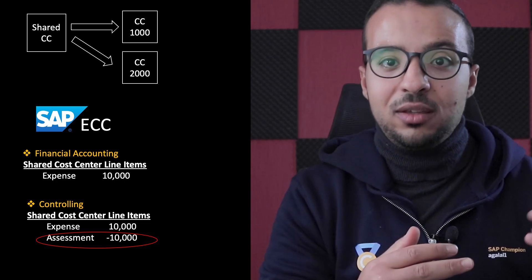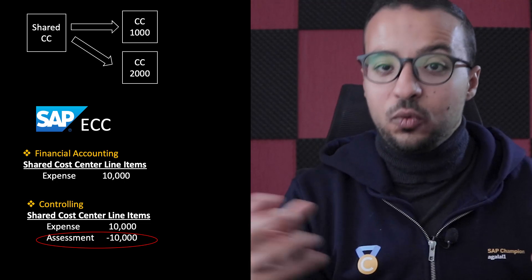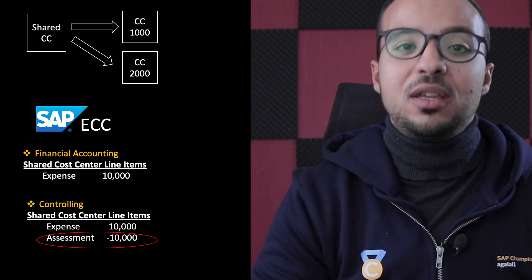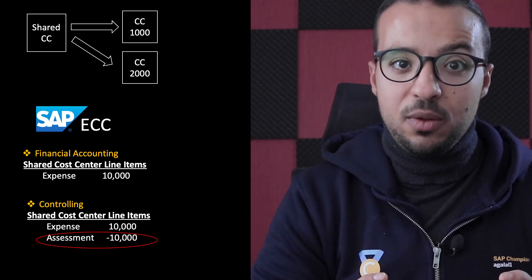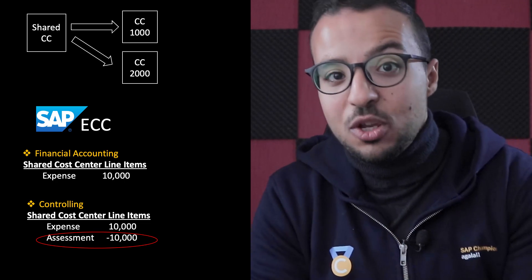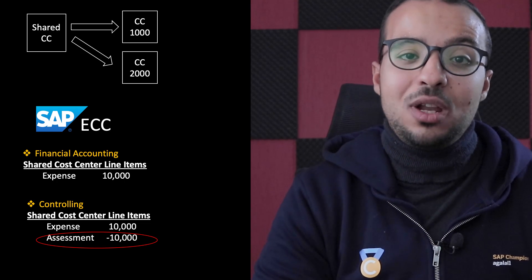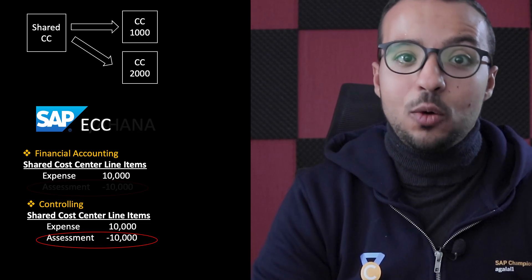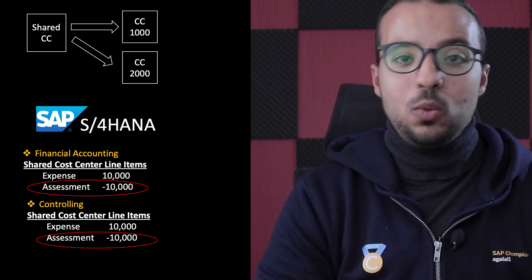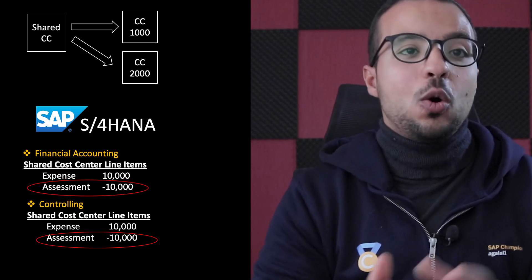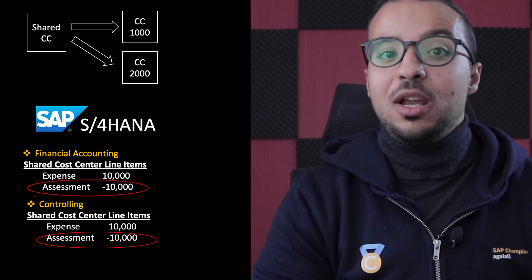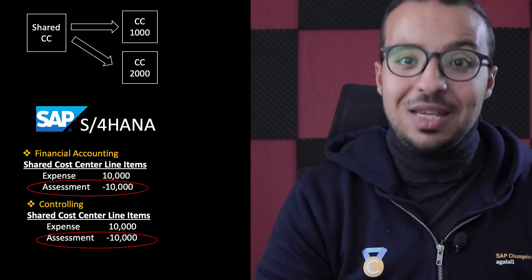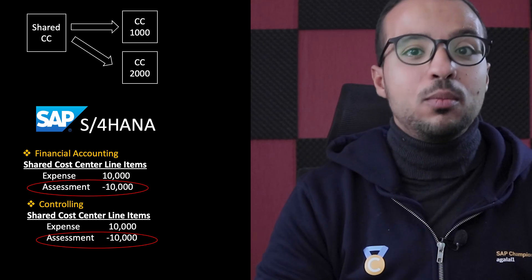In order to reflect the changes made in controlling to finance in SAP ECC, we have to run a reconciliation program. While in SAP S/4HANA, primary and secondary cost elements are both considered GL accounts but with a different GL account type. So when we create the GL account, we can choose whether this is a primary cost element or a secondary cost element.